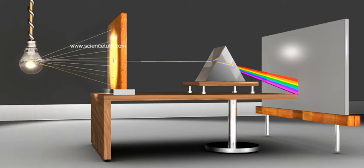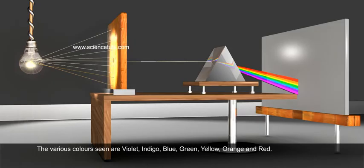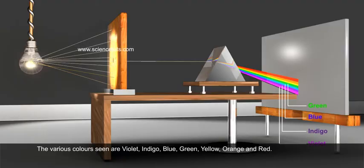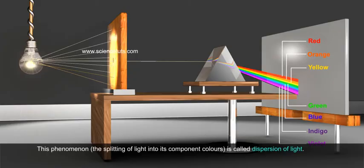What are the seven colours that you see on the screen? The various colours seen are violet, indigo, blue, green, yellow, orange and red.